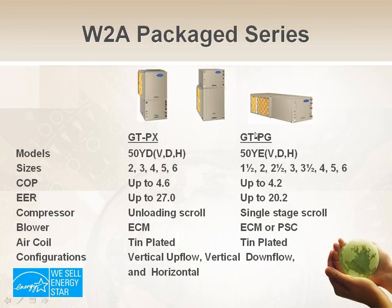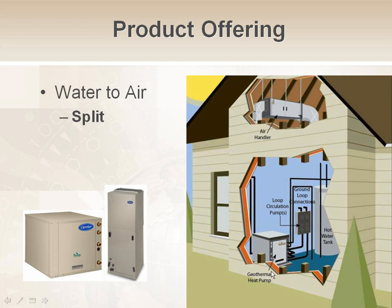The split system separates what I call the condensing unit section — the section with the compressor — which can be placed indoors or outdoors, or in a second-floor mechanical room. This split system enables us to pipe refrigerant to a separate air handler, which can be placed in a closet, an attic, or a second-floor mechanical room. It takes up much less space and allows more flexibility than running ductwork or piping water throughout the entire house. We can take refrigerant piping up to an attic or second-floor installation.